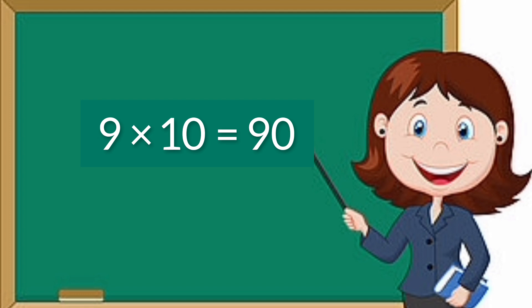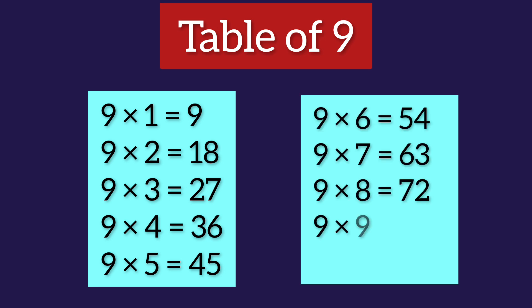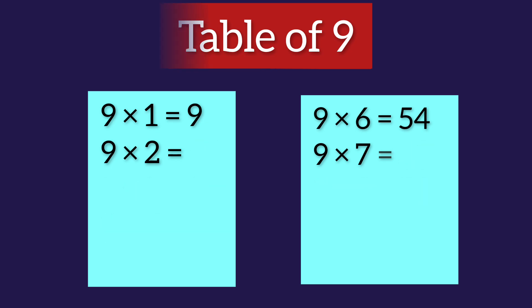9×10=90. Let's see once again. 9×1=9, 9×2=18, 9×3=27, 9×4=36, 9×5=45, 9×6=54, 9×7=63, 9×8=72, 9×9=81, 9×10=90.